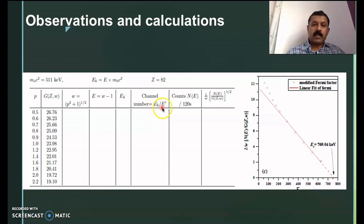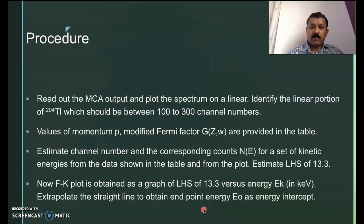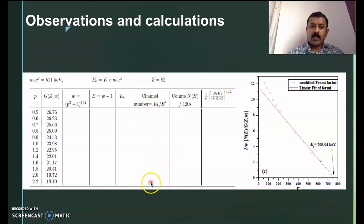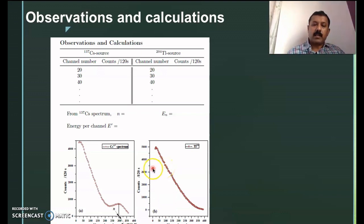After finding the channel numbers corresponding to these momentum values, locate the counts corresponding to these momentum channels using the thallium-204 spectrum. From that spectrum you know the channel numbers — mark these channel numbers on the x-axis, extend a vertical line to meet the curve, then drop a perpendicular to the y-axis to read off the corresponding count rate for that particular channel.